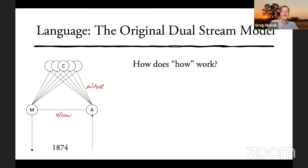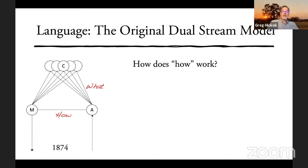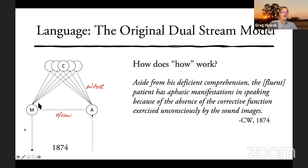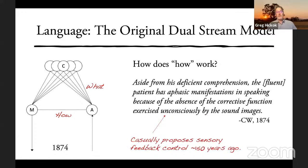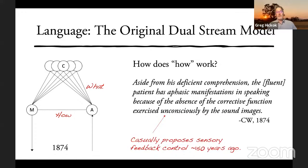On the other hand, if you were going to repeat an auditory word, you could map it directly onto the motor system — how you go from auditory to motor representation for speaking. Interestingly, Wernicke talked about how this 'how' stream worked, noting that fluent patients have aphasic manifestations in speaking because of the absence of the corrective function exercised unconsciously by the sound images. He believed you reactivated the auditory system as a corrective mechanism — essentially sensory feedback control, a prominent notion in motor control, which he previewed back in the 1870s.